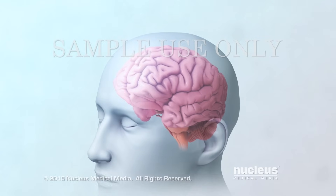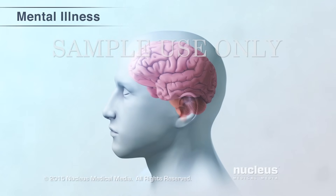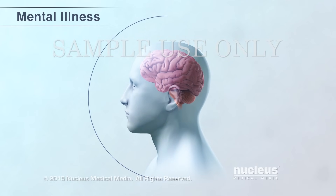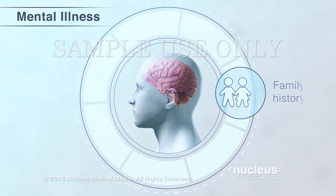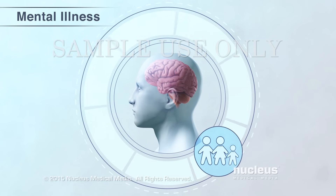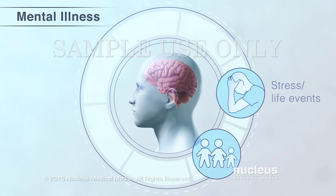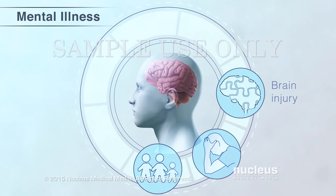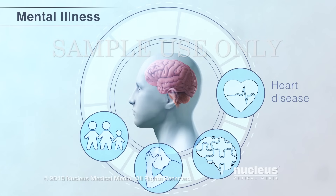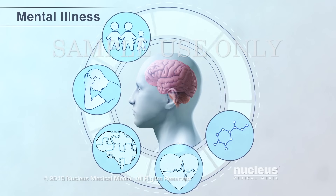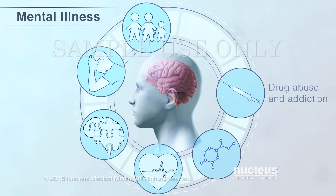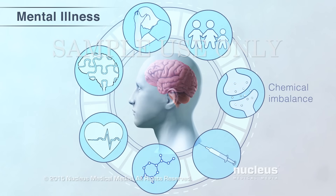Problems with this process may result in brain disorders known as mental illnesses. All the causes of mental illness aren't known. However, a number of factors may contribute to it. Some of these factors are a family history of mental illness, which can be passed from parent to child through genes, severe emotional or stressful life events, or a head or brain injury. Other factors may include health problems such as heart disease, problems with other chemicals in the body called hormones, drug abuse and addiction, and an imbalance of chemical messengers in the brain.